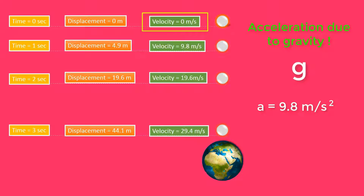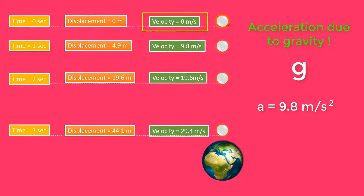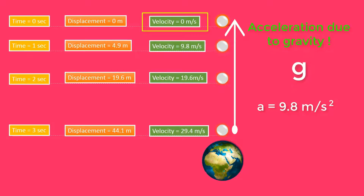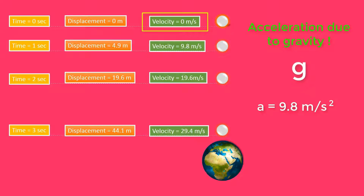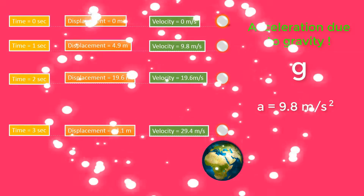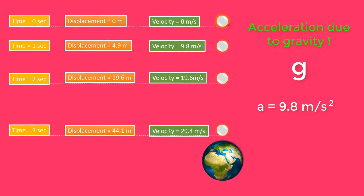Lastly, what is the direction of acceleration due to gravity? Whether a body falls downward or goes upward, in both cases the change in velocity is downward. Hence the direction of acceleration due to gravity should always be in the downward direction. I hope you have understood the concept of acceleration due to gravity.